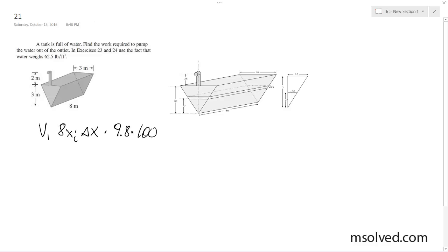The density of water per cubic meter. And then you end up with 78,400 xi delta x.